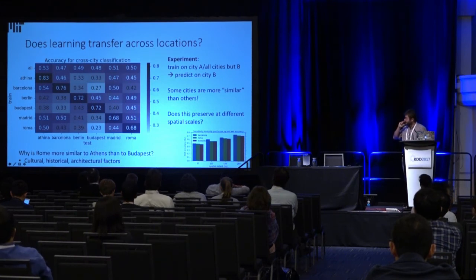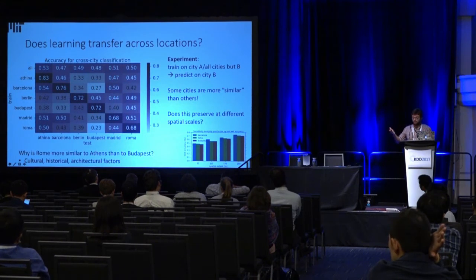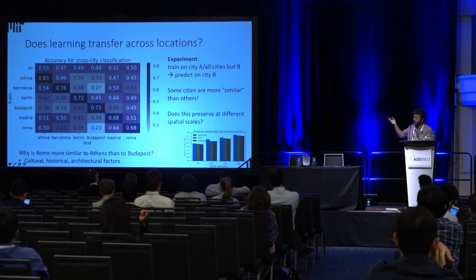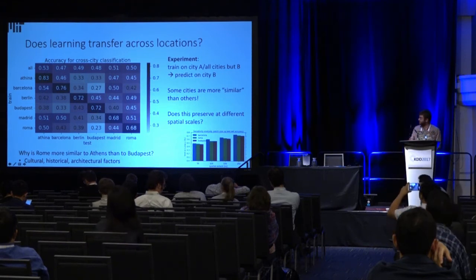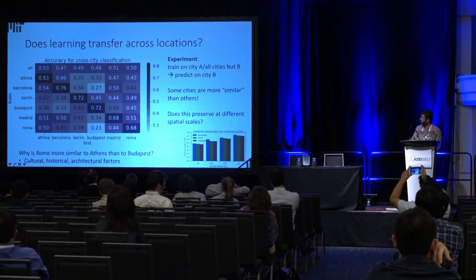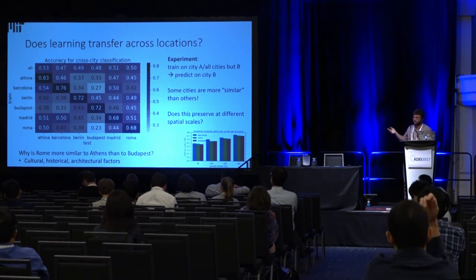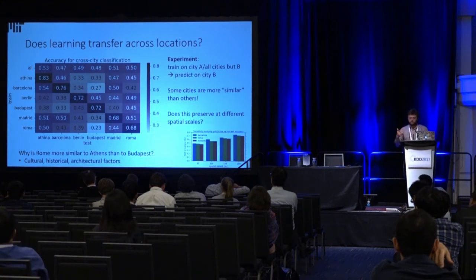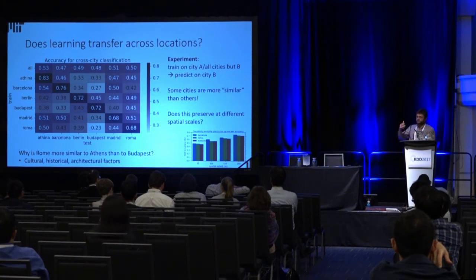More quantitative results show the situation where we ask: if I train my model on city A, how well does it do on city B? The diagonal shows higher accuracy numbers — obviously when training on the same city you're predicting, the model performs better. But there are interesting patterns: train on Barcelona and predict on Athens, you get better performance than predicting on Budapest or Berlin. Barcelona and Athens are both warm Mediterranean countries with similar climate and architecture, and there may be various cultural factors behind this.